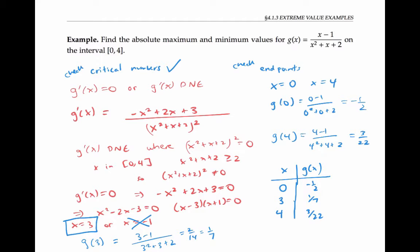Now to find the absolute maximum and minimum values, I just have to figure out which y value is the biggest and which is the smallest. Clearly negative one half is the smallest, so that's the absolute minimum value. To compare one seventh and three twentieths: one seventh equals three twenty-firsts, which is bigger than three twentieths. So one seventh is our absolute maximum value.